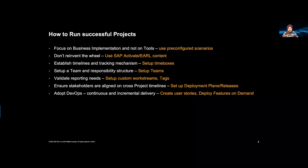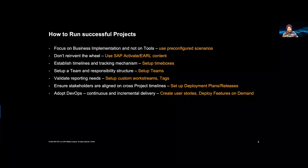Let's see how SAP Cloud ALM helps at a technical level. 'Focus on the implementation, not on tools' means use pre-configured scenarios — this tool runs out of the box with no configuration required. You request a tenant and get it in as little as 15 to 20 minutes, then start using it immediately. That means you really focus on the business problem, not technology setup or hundreds of custom configuration settings — none of that is required. It just works. Don't reinvent the wheel: use the guidance and methodology provided by SAP Activate.